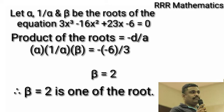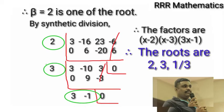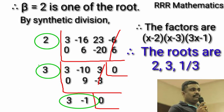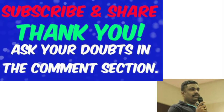Therefore, β = 2 is one of the roots. By synthetic division, we are getting 2 and 3 are also roots. Finally, 3x - 1 = 0 is left. Therefore, the factors are (x-2)(x-3)(3x-1), and the roots are 2, 3, 1/3. Got it? Not just 3, 1/3.